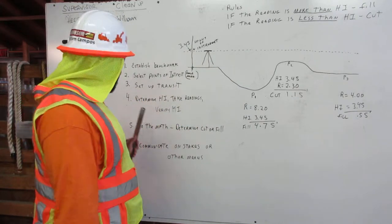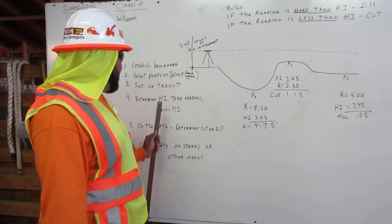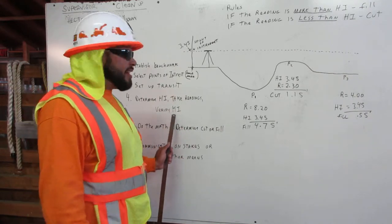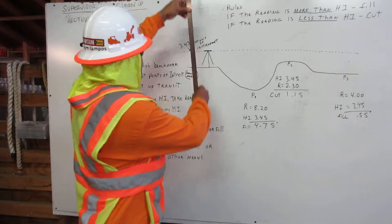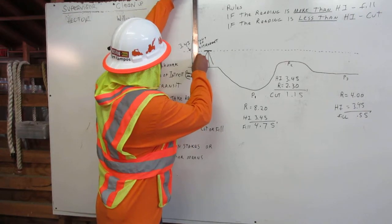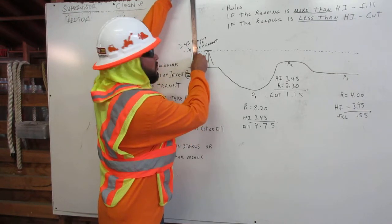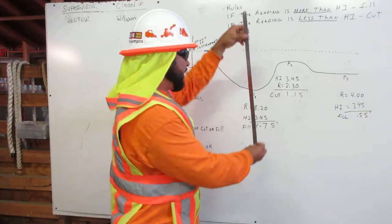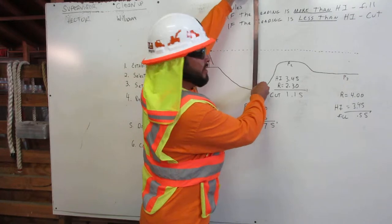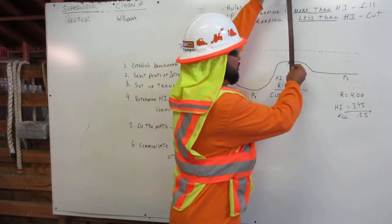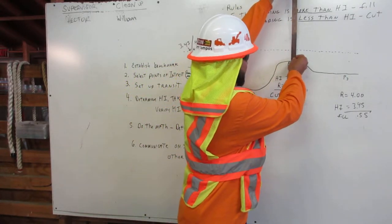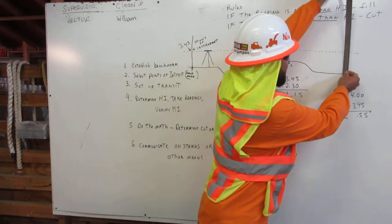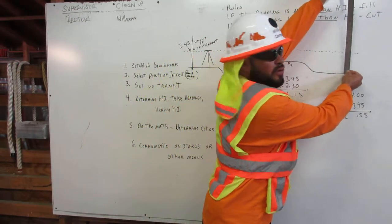Number four: we determine the height of instrument, take readings, and verify the height of instrument. Our benchmark is about 3.45. Our first point of interest reading is 8.20. Our number two point of interest is 2.30. And our number three point of interest is 4.0.